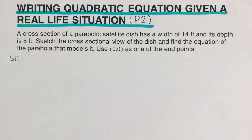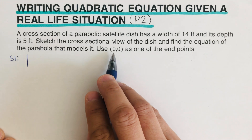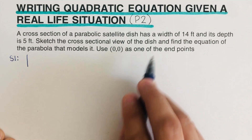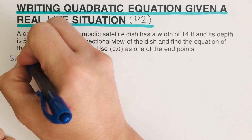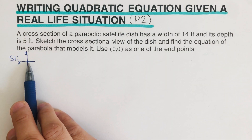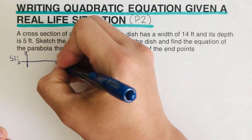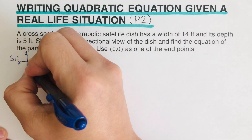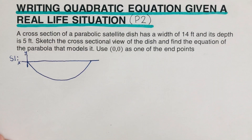Part of Step 1 is to sketch the graph. It says to use (0, 0) as one of the endpoints, so we draw the x and y axes. Since this is a parabolic satellite dish that opens upward, we draw a parabola opening upward. Then we label its vertex and the endpoint coordinates.